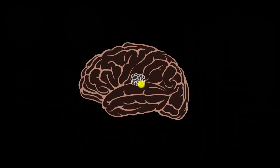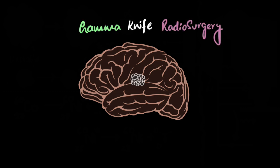If there's a tumor deep inside your brain, how do you get rid of it without damaging the healthy tissues? One way is using a procedure called gamma knife radiosurgery.